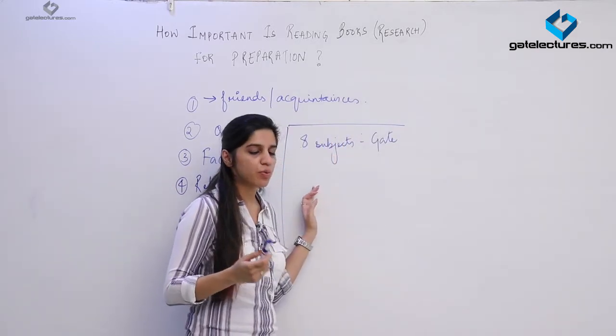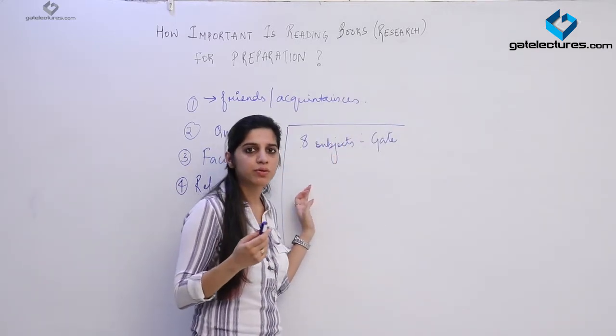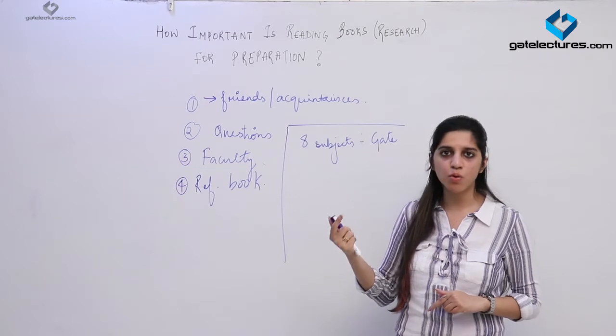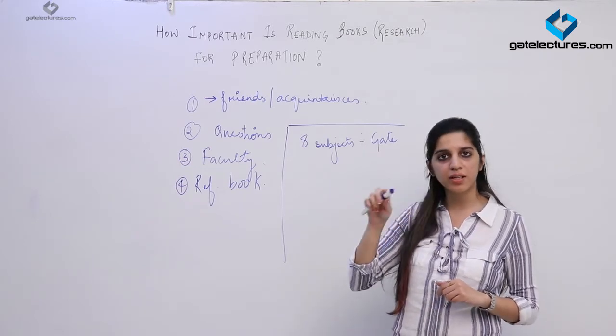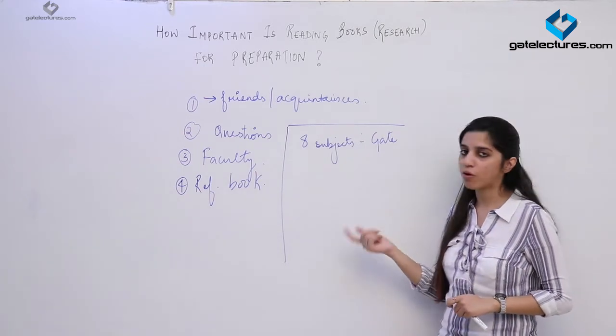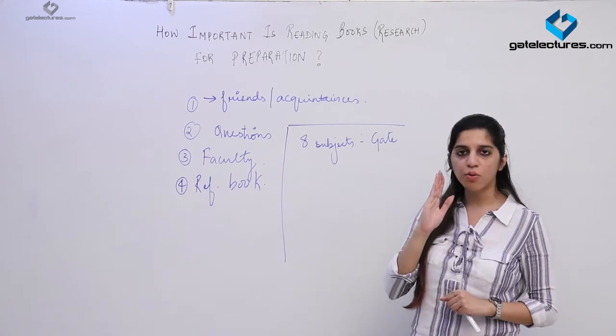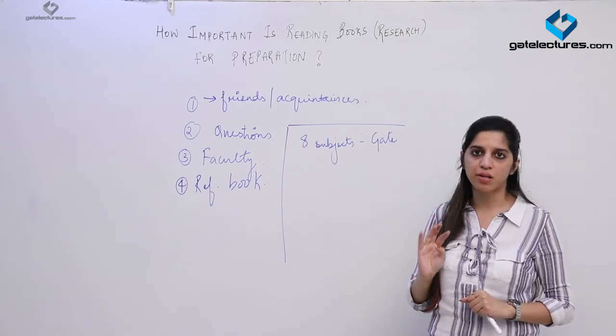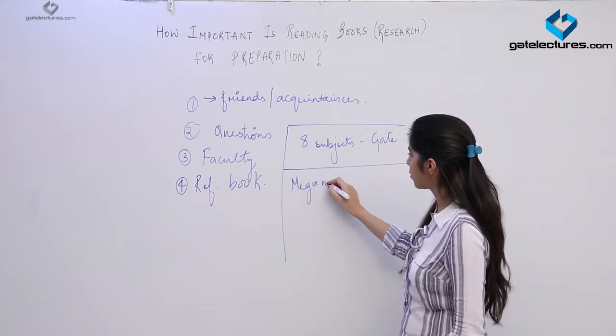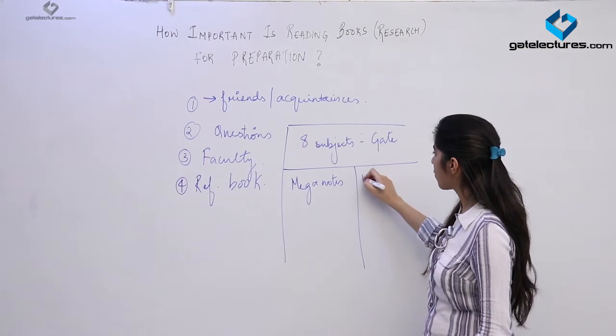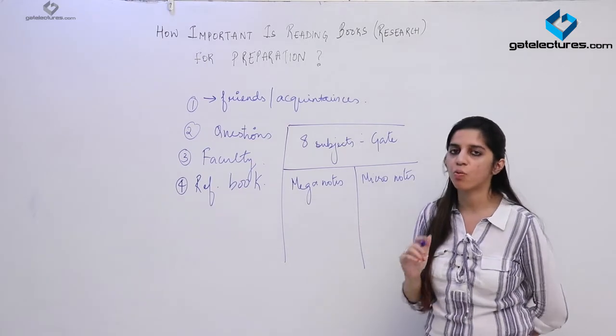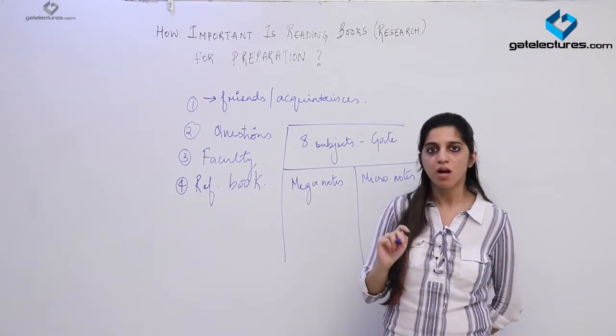What people do is, when you are reading a book, you read that book once, then you will underline important parts. Next time when you want to revise, what do you do? You take out the book, then you read the underlined parts. That takes a lot of time. One practice that you can follow in place of that is forming your own notes - micro notes and mega notes. What are these mega notes and micro notes? Whenever you are going through a lecture or maybe studying in classroom, whenever you are revising your class notes or watching a lecture, what do you do? You form two types of notes.